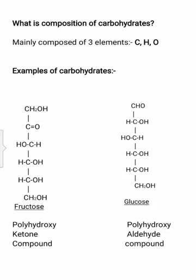What is the composition of carbohydrates? Carbohydrates are mainly composed of three elements: carbon, hydrogen, and oxygen. I repeat — they are composed of three elements: carbon, hydrogen, and oxygen.